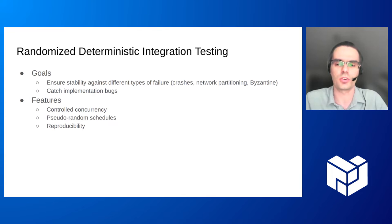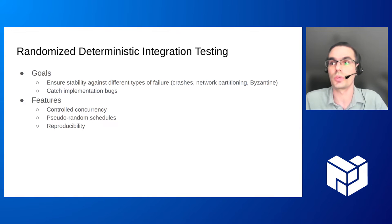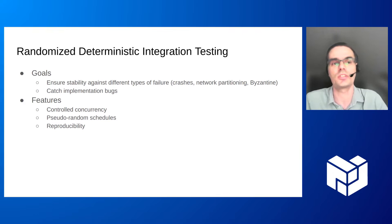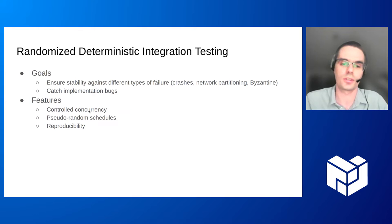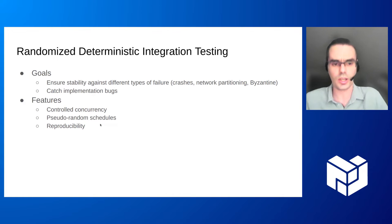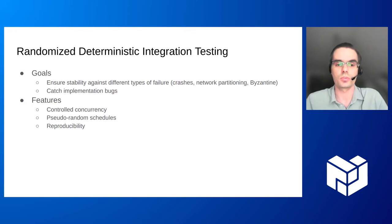When we think about integration testing of a consensus protocol, it appears a good idea to make such testing deterministic. So if we get a test failure in CI, we can take a random seed and reproduce the failure exactly, then debug it step by step. To achieve that, we need to control concurrency in the node and between nodes, and we'd also like to explore different schedules of execution using pseudorandom schedules to catch different bugs.